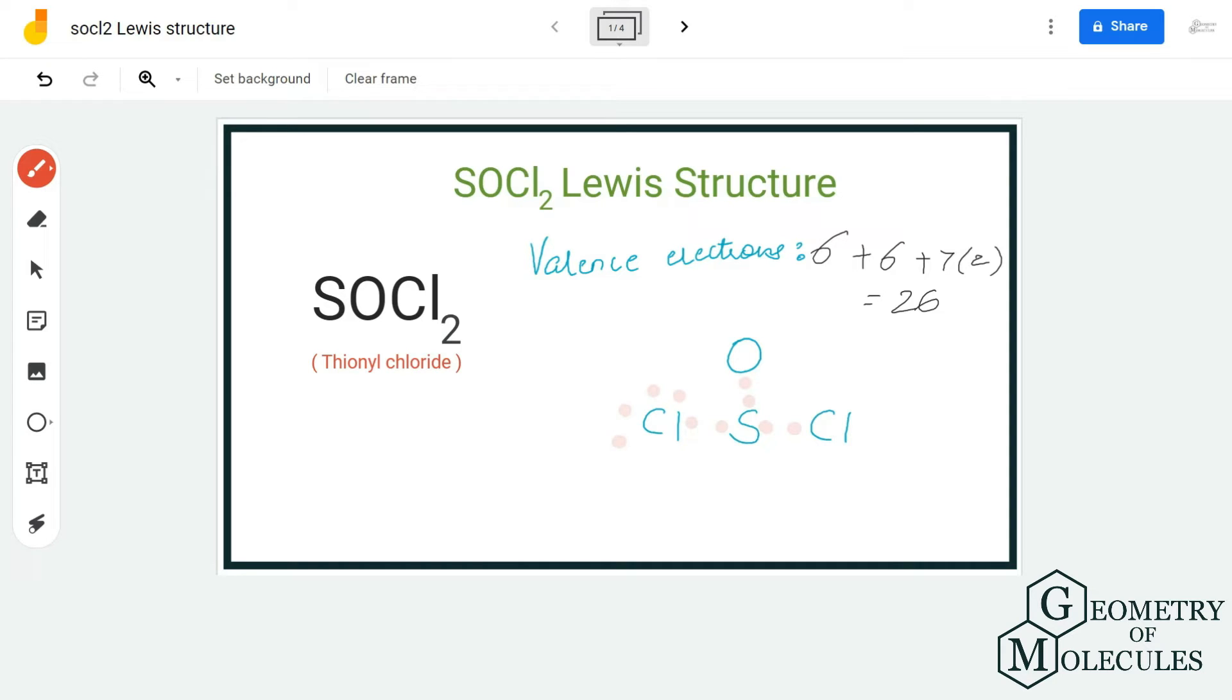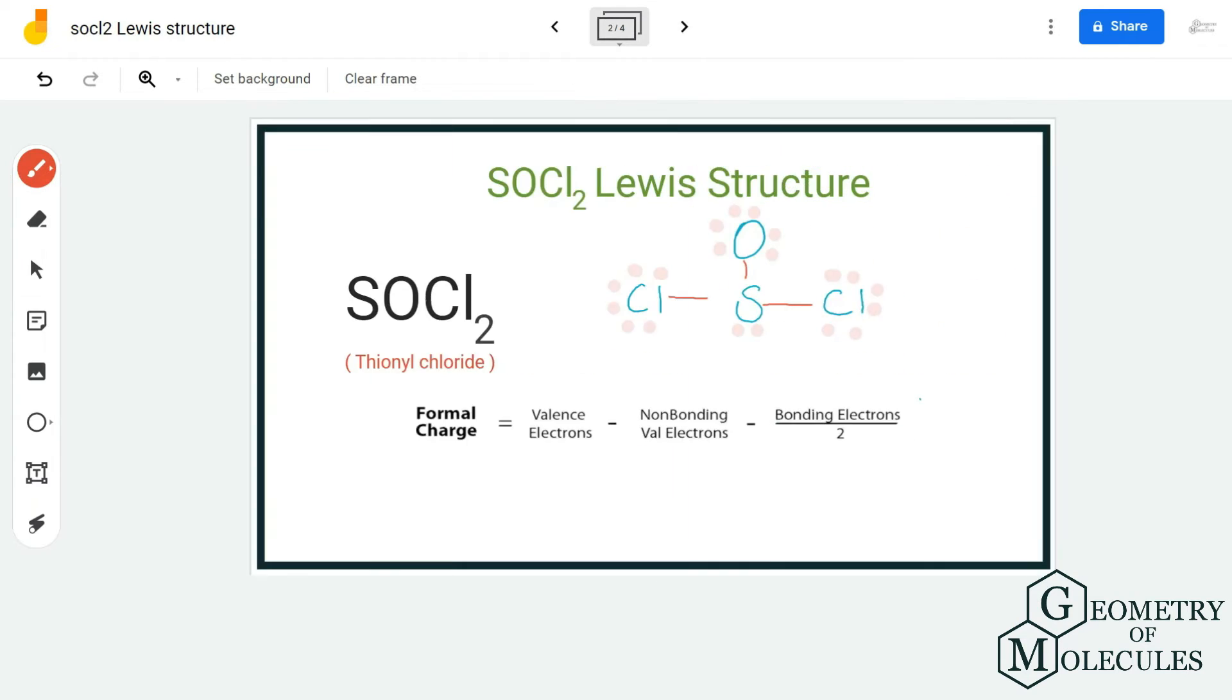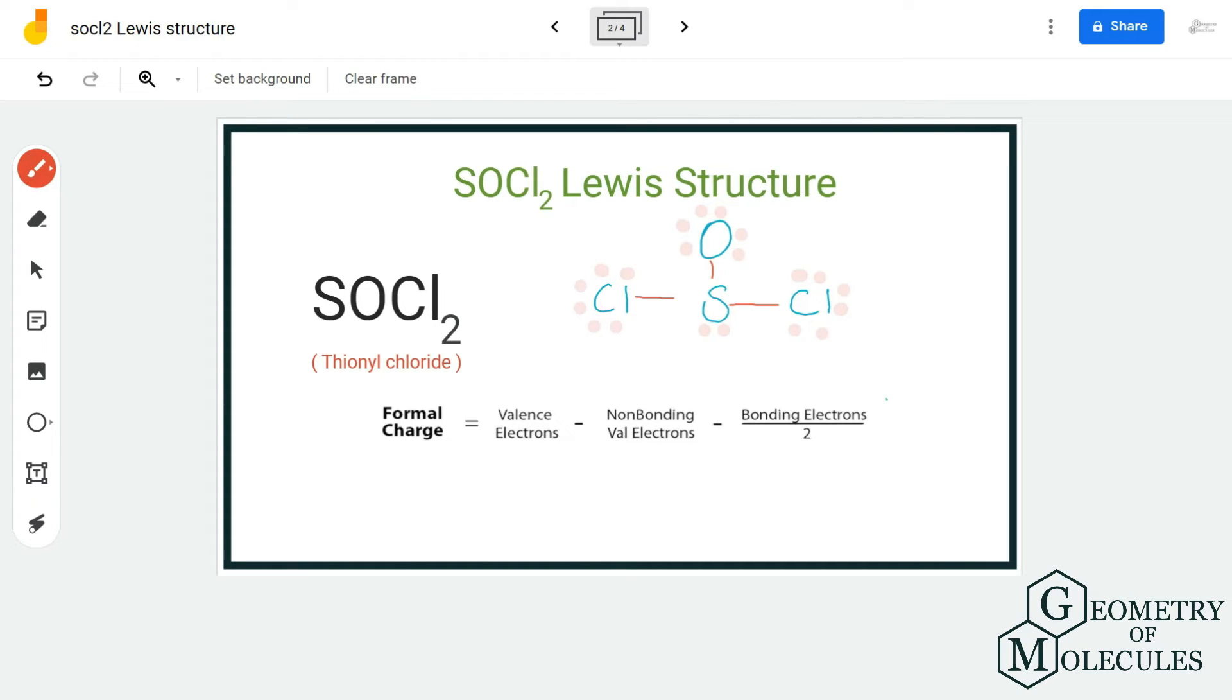The remaining electrons will be placed around atoms to complete their octets. Each chlorine and oxygen atom has two valence electrons and just needs six more, so we are going to place six valence electrons around both the chlorine and oxygen atoms. Then we will be left with two valence electrons which will be placed on the sulfur atom.